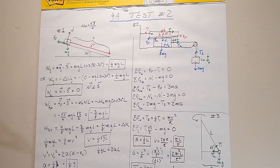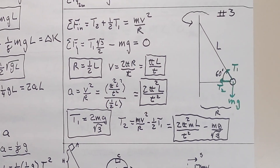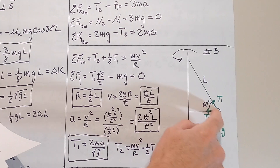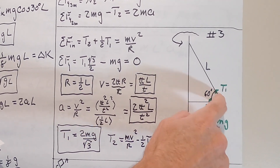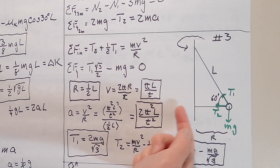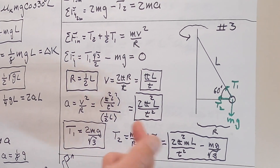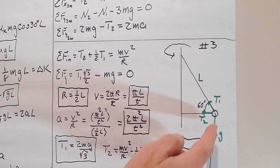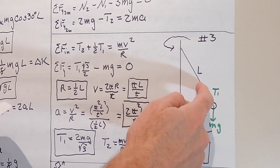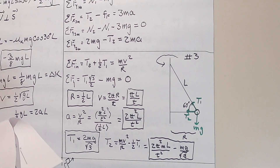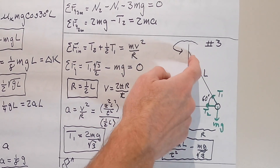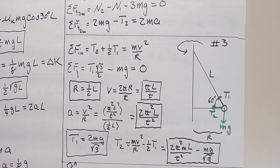Problem number three: a small bead of mass m rotates about a vertical post at constant speed by two strings. There's a string going horizontally and another going up at 60 degrees with length l. The period of rotation is little t — I don't want to get it confused with the big T tensions. The lower string is horizontal and the upper string of length l is at 60 degrees. First, draw the forces on the bead. There are only three forces: two tensions, T2 going horizontally and T1 going up at 60 degrees, and mg downward.